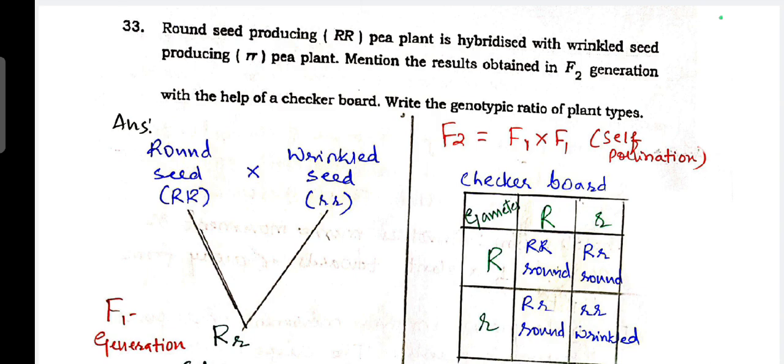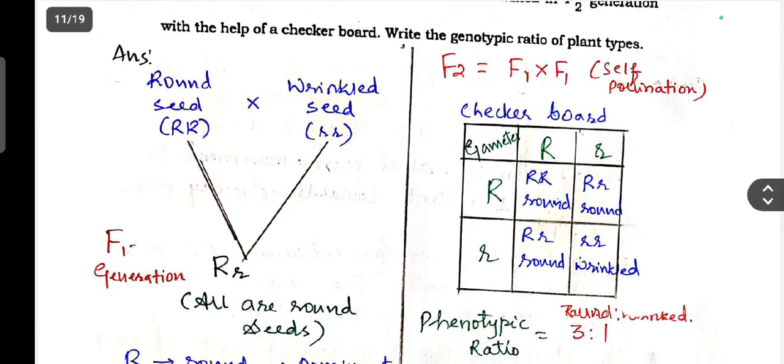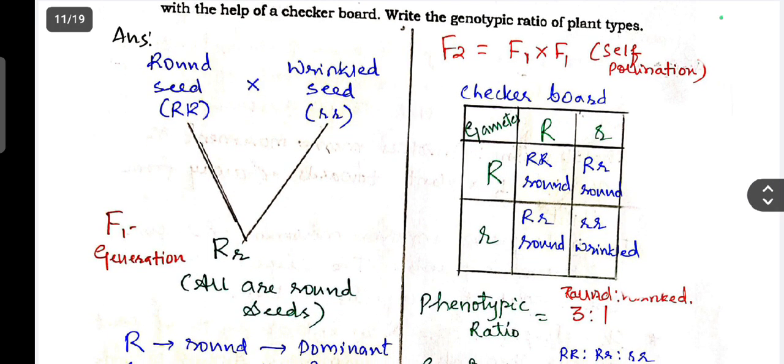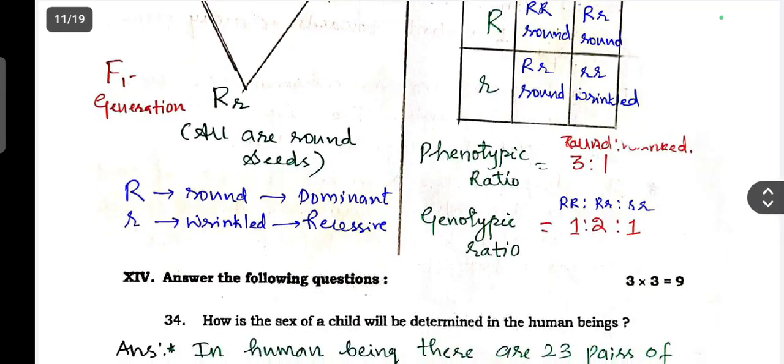Next, round seed producing RR plant is hybridized with wrinkled seed producing rr plant. Mention the result obtained in F2 generation with the help of checkerboard. Write the genotypic ratio of the plant type.